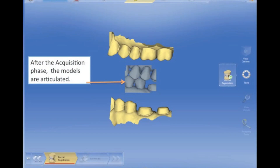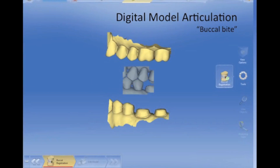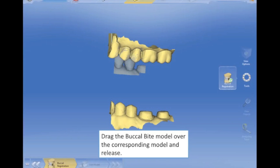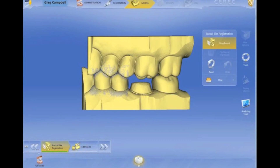Now we're going to do our buccal bite, which is absolutely fantastic — there's nothing new here except I just think it works better. I always stitch the lower arch, even though I'm going to show you the upper arch first. I think the engineers in Germany prefer it that way, but I think it works either way very well. You're going to grab the gray, bring it up, let go of it — it's going to grab it — then grab the gray, put it onto your lower arch, and you're going to get your stitching. This is an incredibly accurate way of doing your bite.